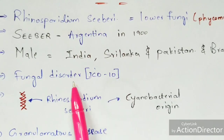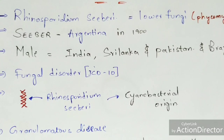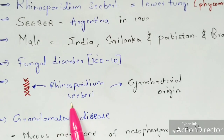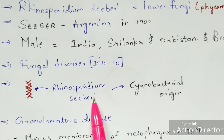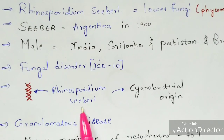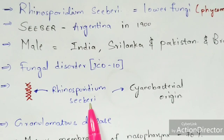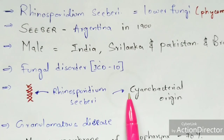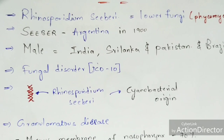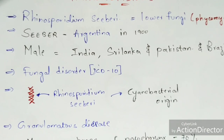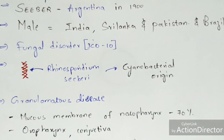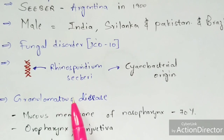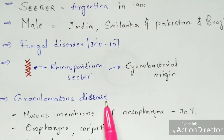Rhinosporidiosis is considered a fungal disorder belonging to the ICD-10 family. Recent research has extracted DNA from the causative agent Rhinosporidium seeberi, and they concluded that it belongs to cyanobacterial origin — it originated from the cyanobacteria family.